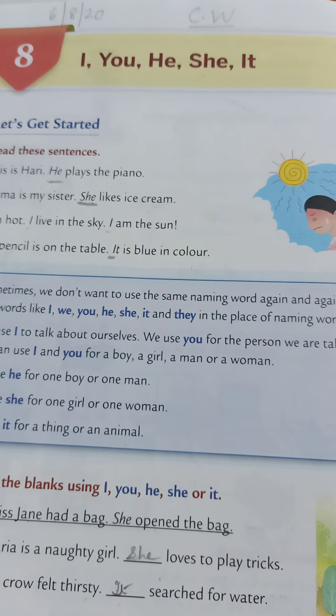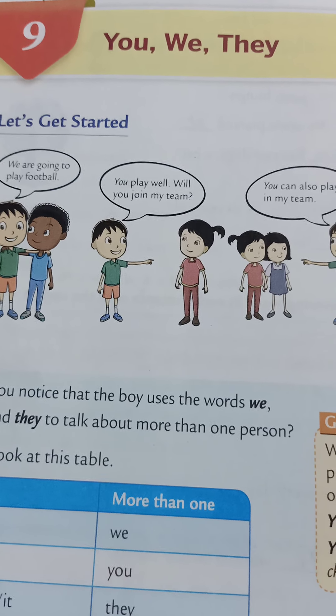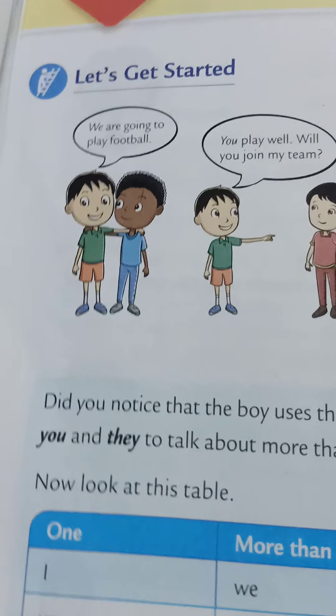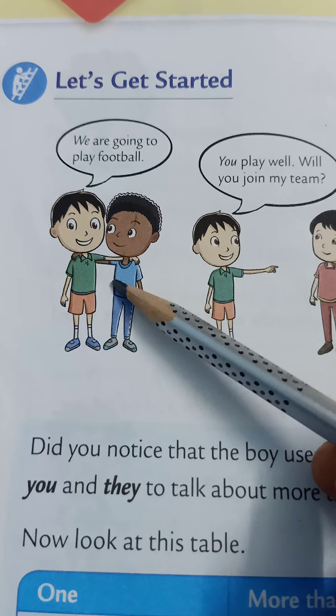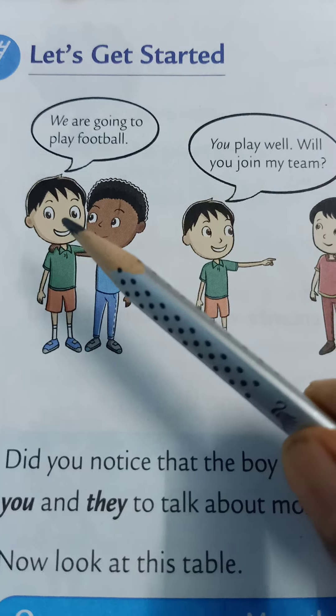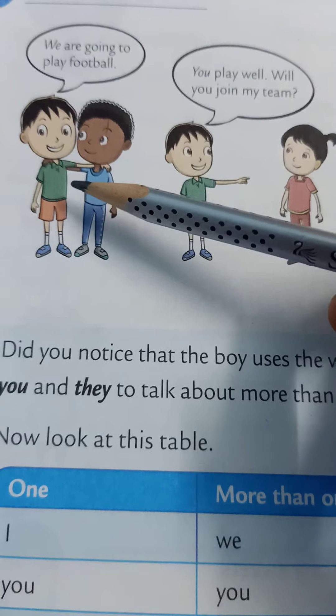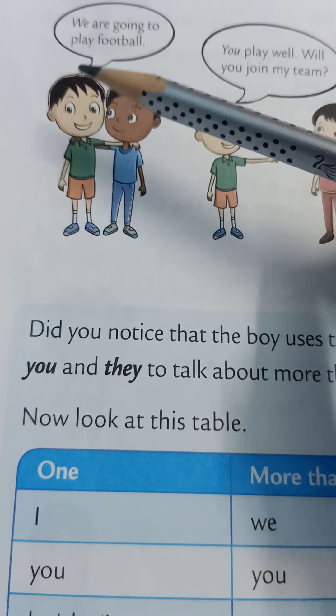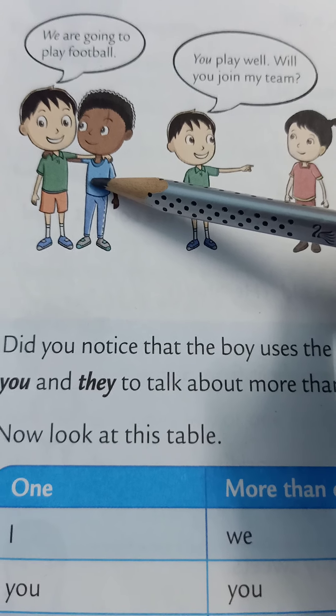Now let's start. Here some pictures are given, children, showing where to put we, they, and you. Here two friends are standing together. If one were standing alone, we would put I. But here two of them are standing together — what are they doing? We are going to play football. So for more than one, we will put we. Only for one, we put I; more than one, we put we.